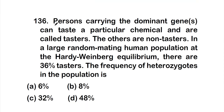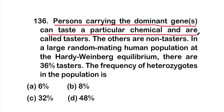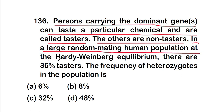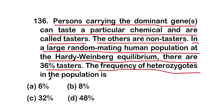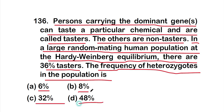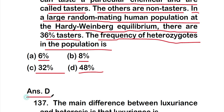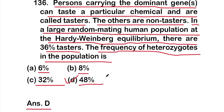Question 136: Persons carrying the dominant gene can taste a particular chemical and are called tasters; others are non-tasters. In a large random mating human population at Hardy-Weinberg equilibrium, there are 36% tasters. The frequency of heterozygotes in the population is option A - 6%, option B - 8%, option C - 32%, or option D - 48%. The right answer is option D, 48%.